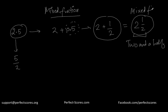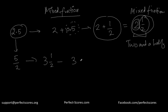A mixed fraction contains an integer part and a fraction part. For example, 3 and a half is nothing but 3 plus 1 by 2, and 4 and 1 third is nothing but 4 plus 1 by 3.